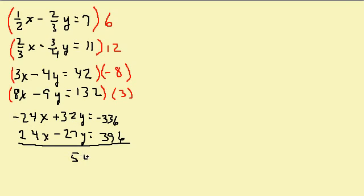Adding the equations, negative 24x plus 24x equals 0, so the x's cancel out and I'm left with 5y equals 60. Dividing both sides by 5, I get y equals 12. Now I need to figure out what x is, so I can plug y into any of these equations.